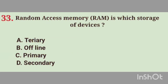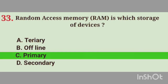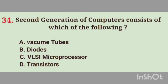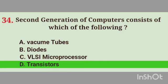Question No. 33. Random Access Memory, RAM, is which type of storage device? Right answer, Option C. Primary. Question No. 34. Second generation of computers consists of which of the following? Right answer, Option D. Transistors.